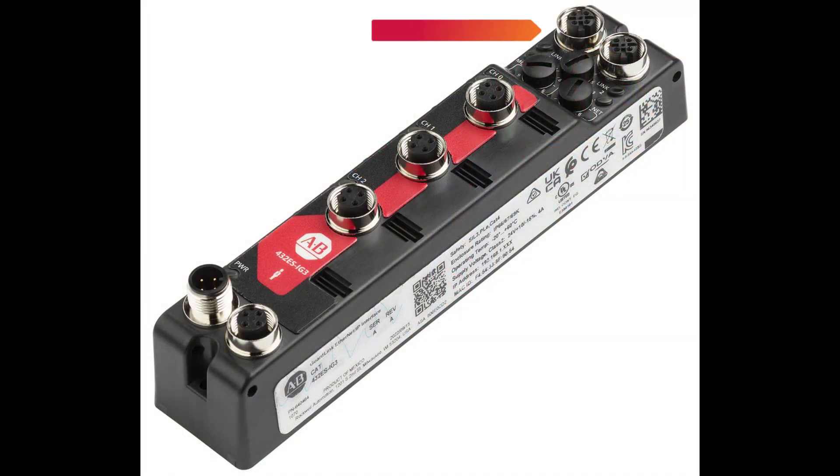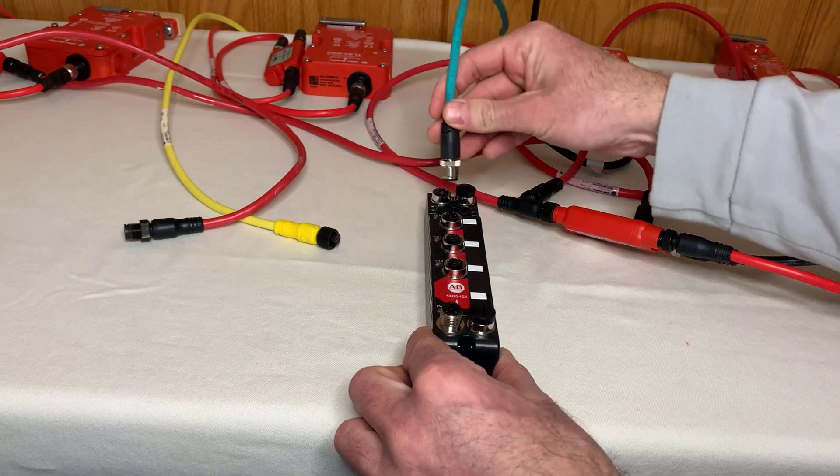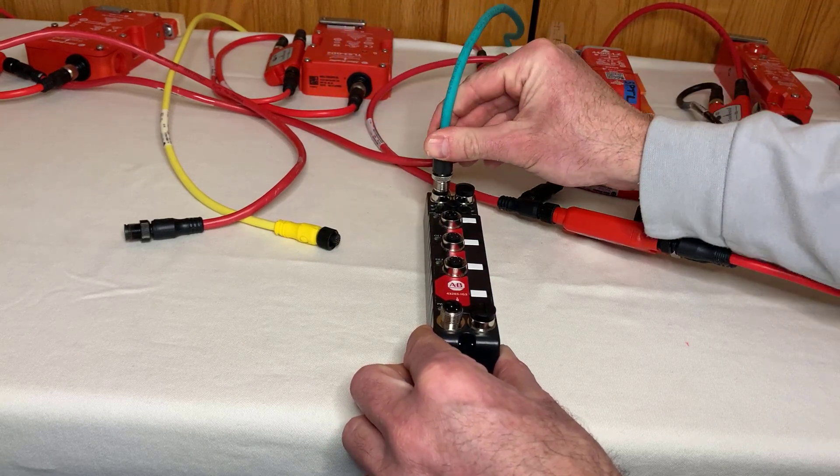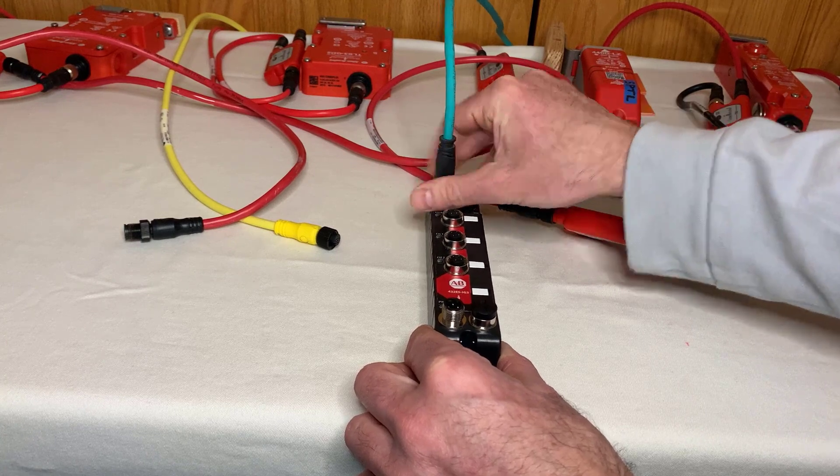Starting from the top, the module has two 4-pin M12 megabit Ethernet ports that can be used in a star, linear, or device-level ring Ethernet topology. For this demonstration, one Ethernet port will be used and the other will remain capped.